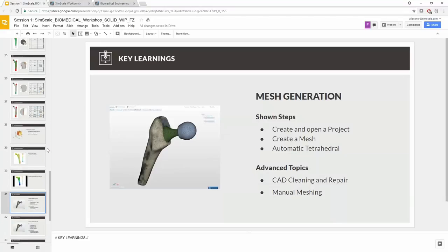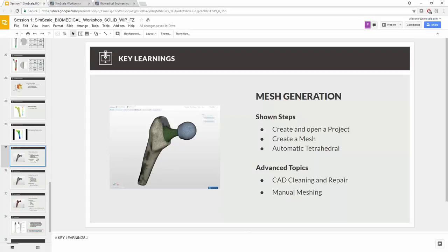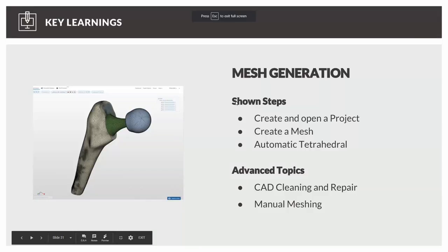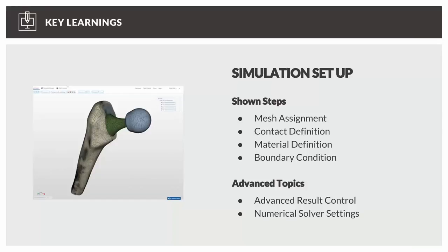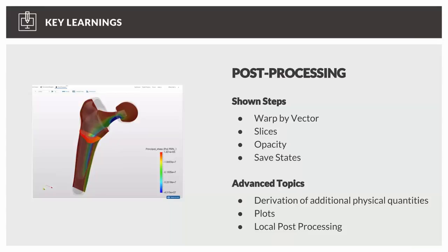That brings us to the key learnings from today's session. We learned how to create a mesh — taking the CAD model and breaking it into tetrahedrons to solve for stresses and strains. The simulation setup involved creating contacts, assigning materials to volumes, and setting boundary conditions. Post-processing included using warp by vector to see hip deformation and a slice to visualize principal stresses acting on the bone and implant.